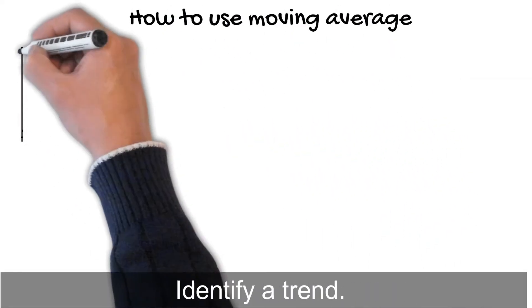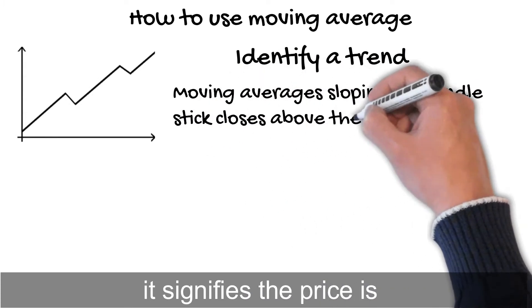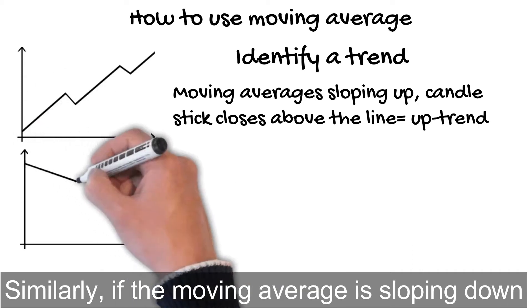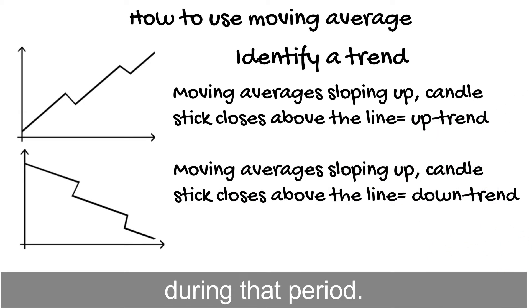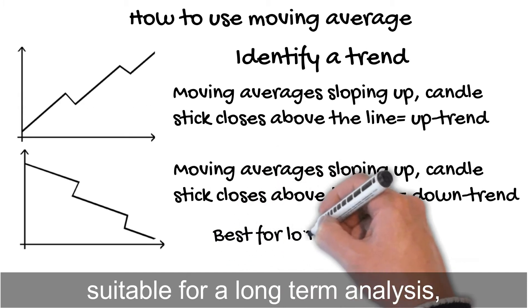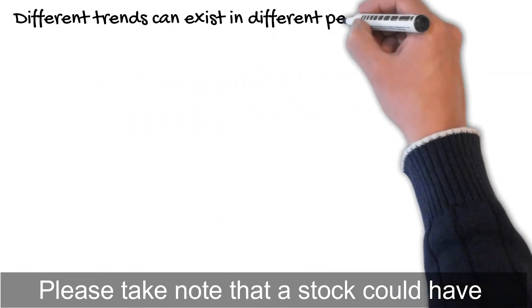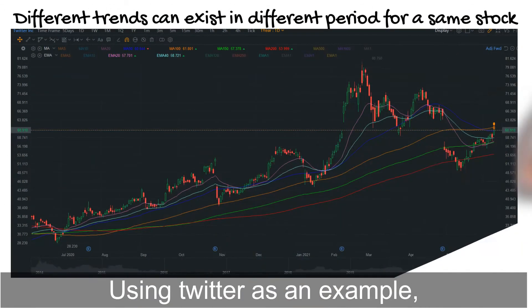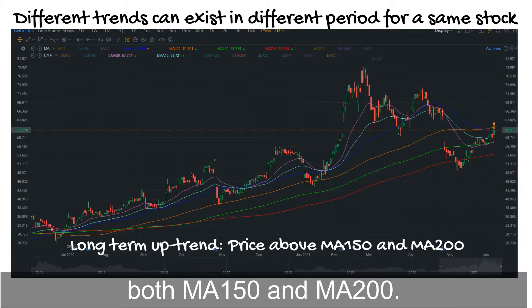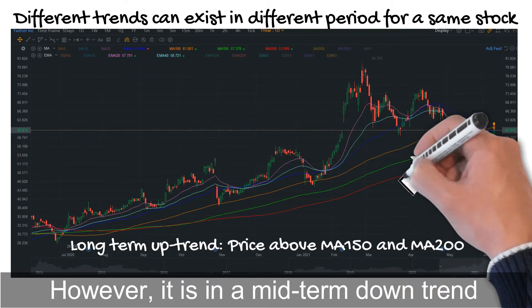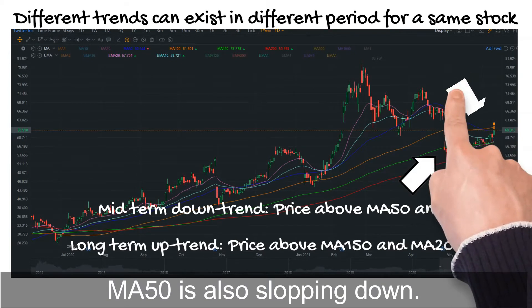How to use moving average? First, identify a trend. If the moving average is sloping up and the candlestick is above it, it signifies the price is in an uptrend. If the moving average is sloping down and the candlestick is below it, it signifies the price is in a downtrend. This approach is more suitable for long-term analysis using MA150 or MA200. Using Twitter as an example, it is in a long-term uptrend because its current price is above both MA150 and MA200. However, it is in a mid-term downtrend as the price is below both MA50 and MA100, and MA50 is also sloping down.